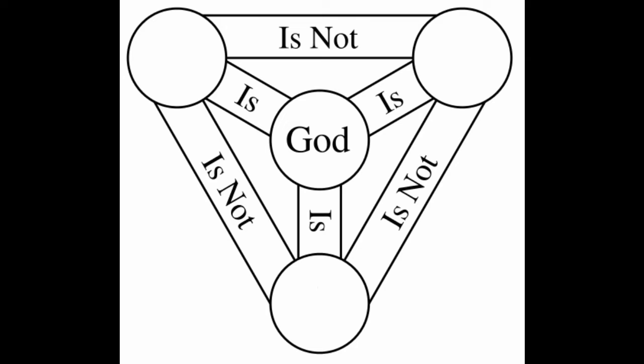But here's an analogy that might help us to think about this, so long as we don't take it too literally. The human mind, right? One human mind. But that one human mind has memory, reason or thinking, and will, the ability to choose. They're all your mind, but they're not all the same thing.